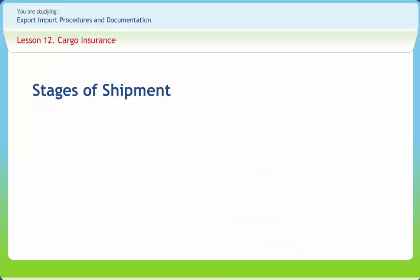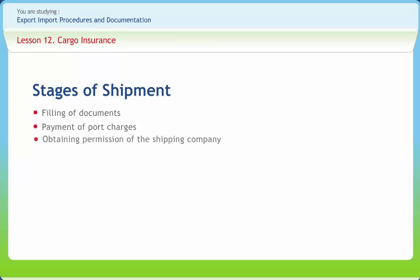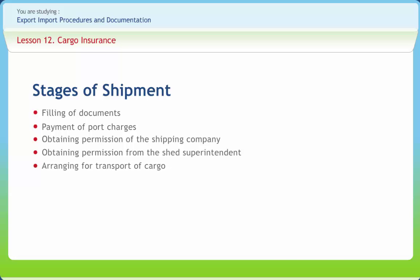The stages of the shipment process involve: filling of documents with the customs authorities for checking the genuineness of the transaction and obtaining an examination order; payment of port charges and obtaining permission of the shipping company to bring cargo into the shipment shed; obtaining permission from the shed superintendent for bringing cargo into the shipment shed; and arranging for transport of cargo to move into the shipment shed through the port gate, with permission of the gate inspector to move cargo into the port area, followed by unloading of cargo in the shipment shed.